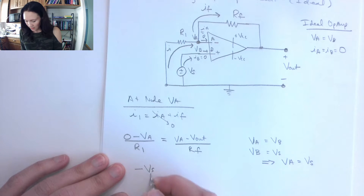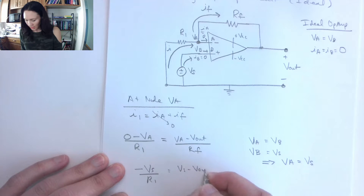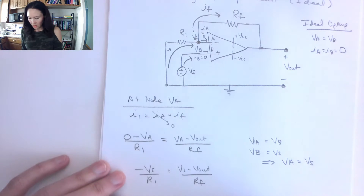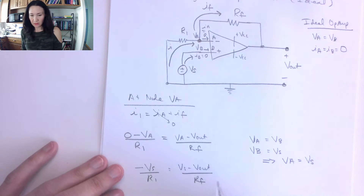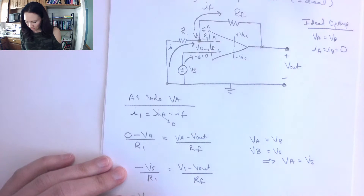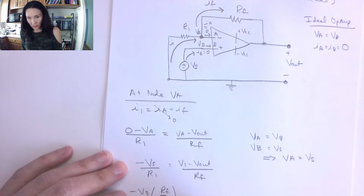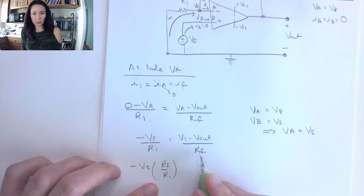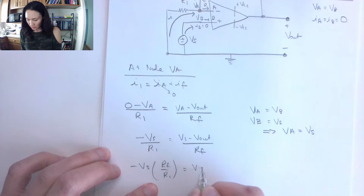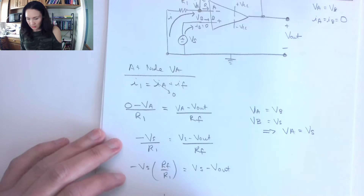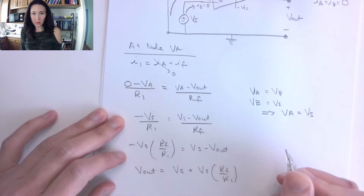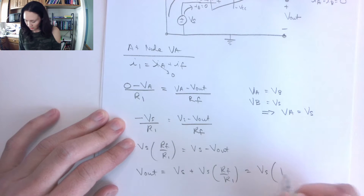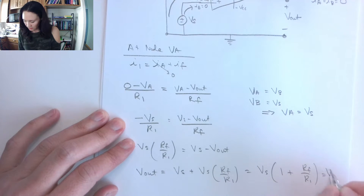So this becomes: negative Vs over R1 equals Vs minus Vout over RF. Solving for V out: multiply RF across, giving negative Vs times RF over R1 equals Vs minus Vout. Therefore, Vout equals Vs times (1 plus RF over R1).